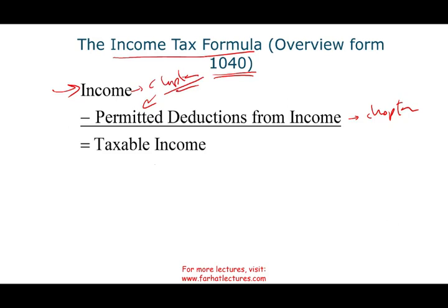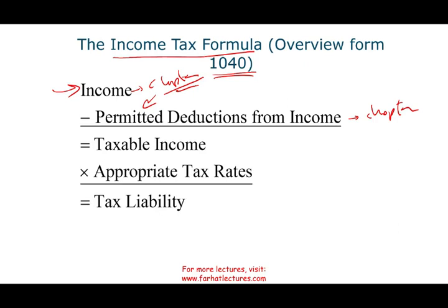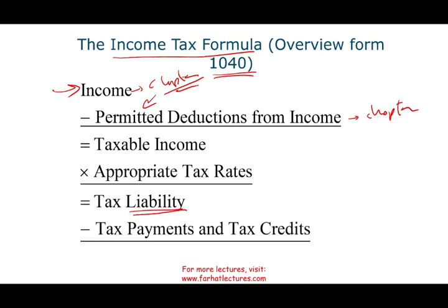Then we come up to taxable income — the income that is subject to taxes. Then we apply a tax rate. Based on our taxable income, we will have to pay taxes; we're going to have a tax liability. From the tax liability, we determine how much we already paid or how much credit we have — payments and credits — and we'll have a whole chapter explaining this.